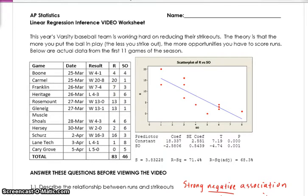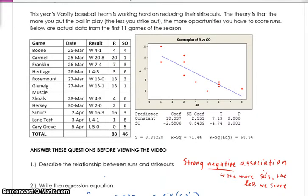So the first thing you see is that there is a negative association. As the number of strikeouts increase, the runs decrease. So when I say describe the relationship, that's what we're talking about, the strength and the direction of the relationship. And also, it looks pretty linear as well.